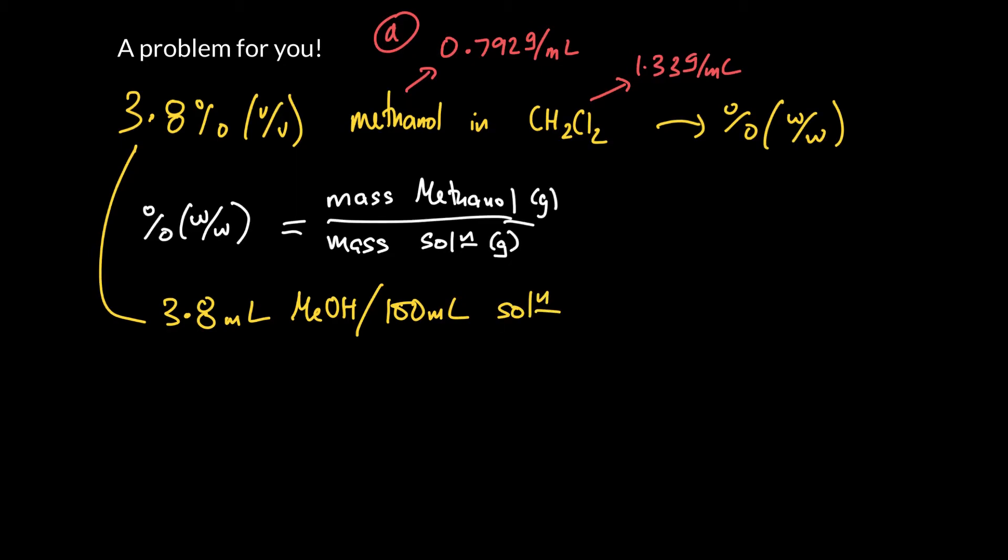So what do we need here? Above here, we need the mass of methanol. So we've got the volume of methanol, we can convert it to a mass. So 3.8 milliliters is a volume. And how are we going to do that? Well, density is mass over volume. So if we want to know mass, that is density times by volume.